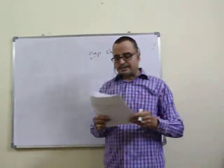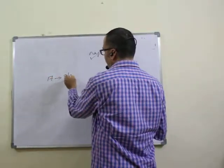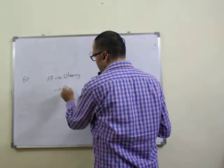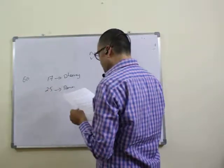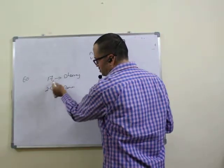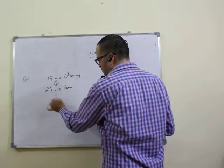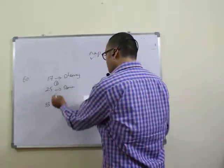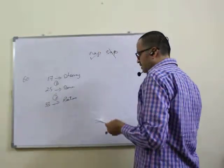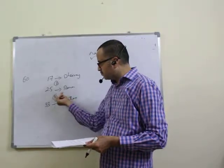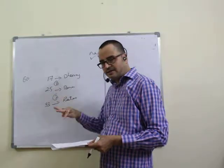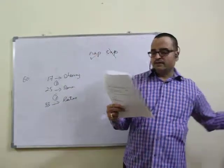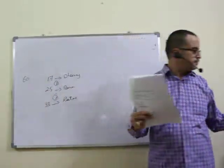Question fourteen: Dheeraj's rank is 17th in a class of 60 students. He is ahead of Rana by eight ranks, so Rana's rank is 17 plus 8 equals 25. There are seven persons between Rana and Ratan, so the difference in rank is 8 — meaning 25 plus 8 equals 33. So Ratan's rank is 33rd. Fourteenth question answer is first option.